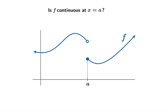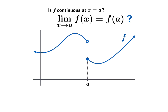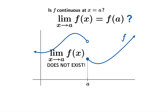In this example it's pretty clear the function is not continuous at a. What you're really asking is: does this limit match the function value f of a? But the limit doesn't exist, so there's no way that this equation can be true, and therefore f cannot be continuous at a.